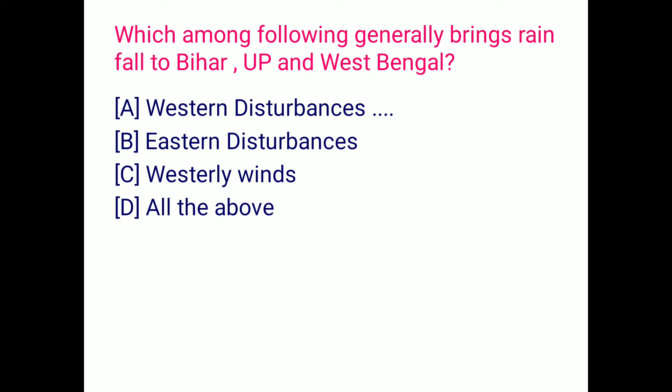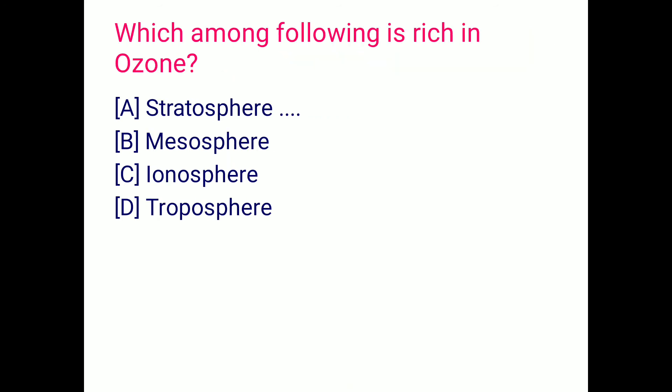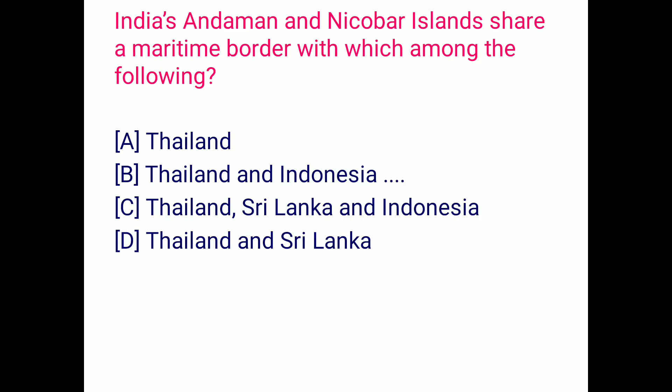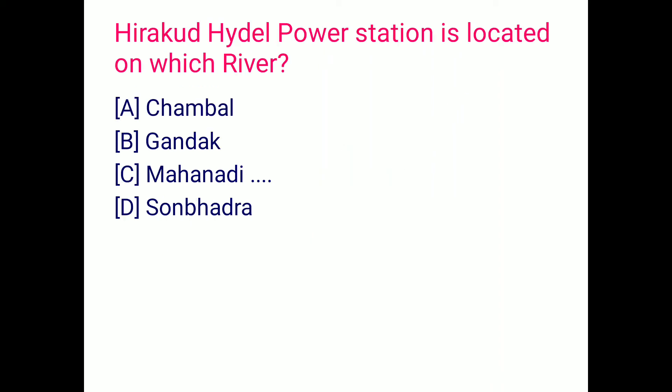Which among the following generally brings rainfall to Bihar, UP, and West Bengal? That is western disturbances. Which among the following is rich in ozone? The stratosphere is rich in ozone. Which among the following is a major source of salt in India? That is salt pans, option A. India's Andaman and Nicobar Islands share a maritime border with which among the following? That is Thailand and Indonesia, option B.